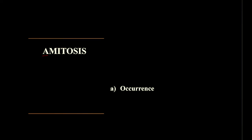Amitosis is also called direct cell division and also incipient cell division. It is a very simple type of cell division — things like production of spindle fibers, condensation of chromosomes, and nuclear membrane disappearance do not happen in amitosis.